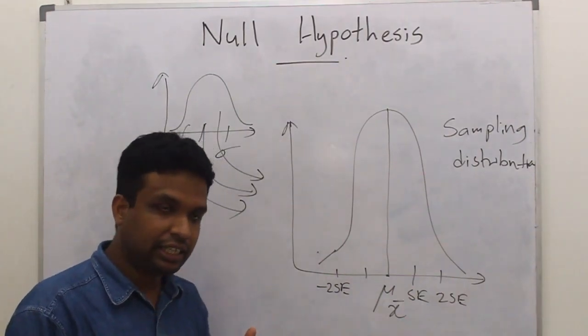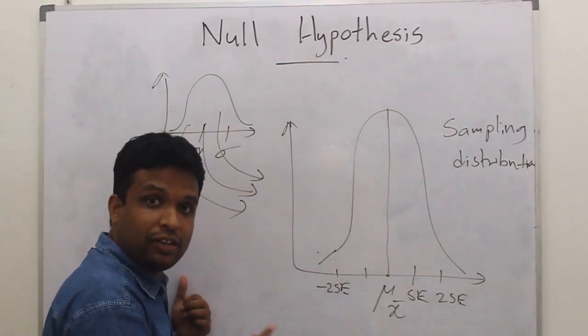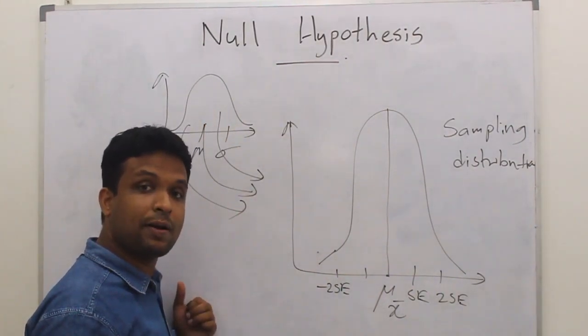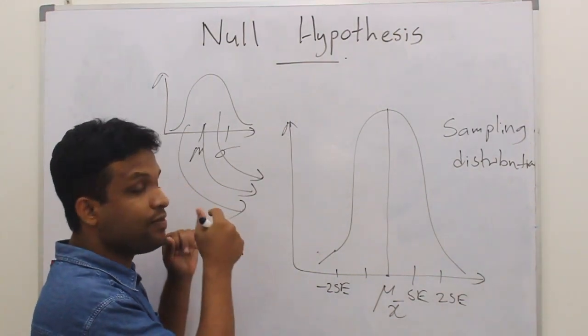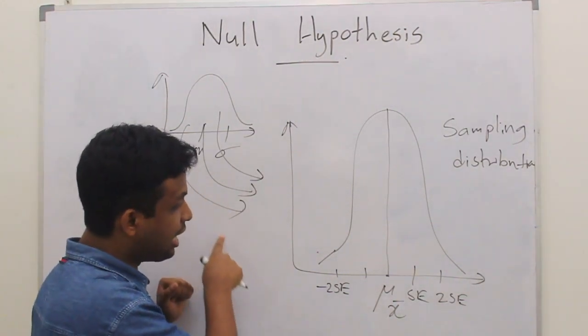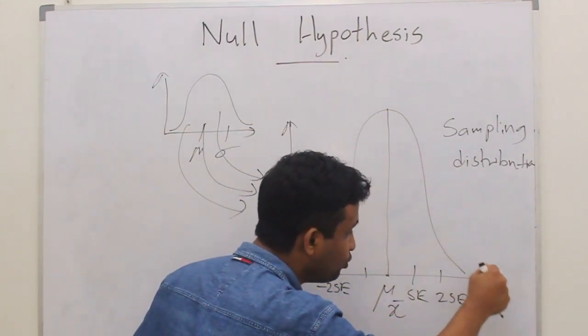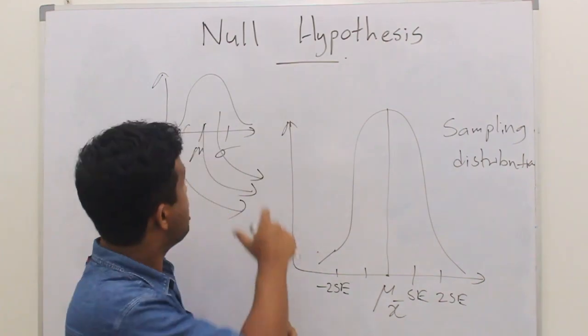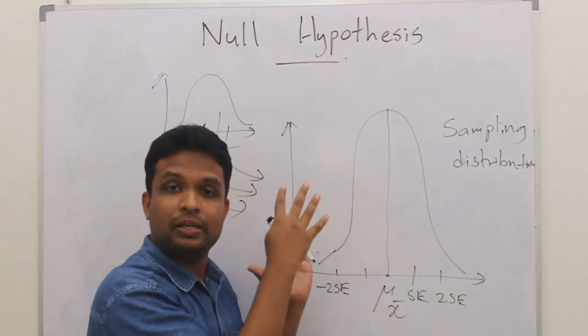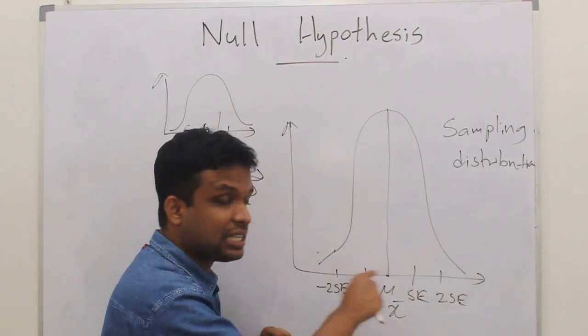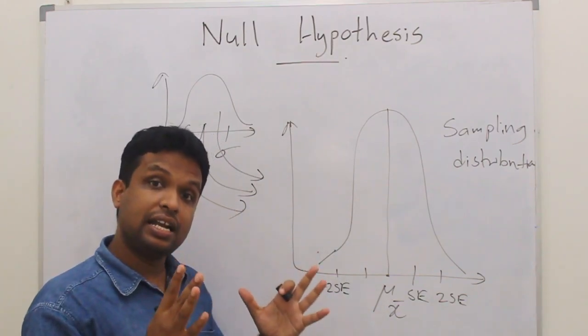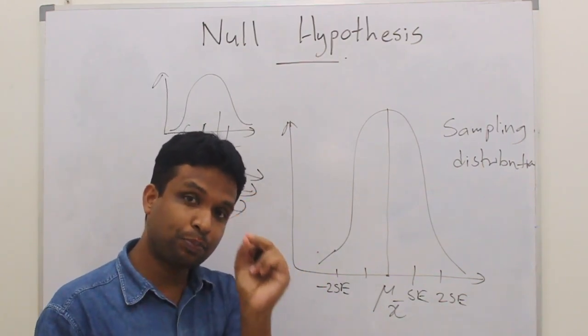But in practical case, we take only one sample which is random and representative with adequate size, and we calculate standard error and draw the sampling distribution. Sampling distribution contains different sample means. All these sample means are random and representative, especially those sample means at the center.